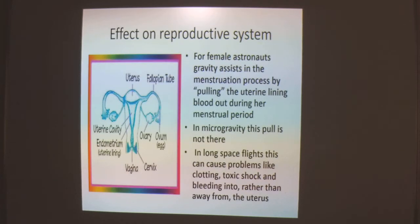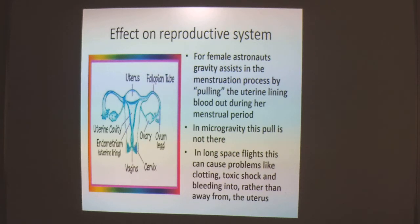Regarding the effect on the reproductive system: for female astronauts, gravity assists in the menstruation process by pulling the uterine lining blood out during the menstrual period. In microgravity, this pull is absent, so in long space flight this can cause problems like clotting, toxic shock, and bleeding into rather than away from the uterus.